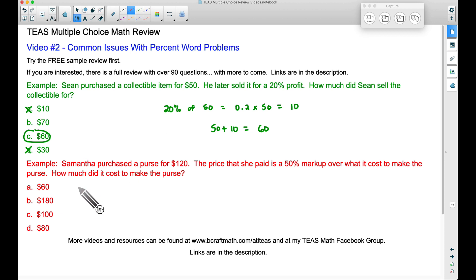Now our second example. This is where I see people make a lot of mistakes. Samantha purchased a purse for $120. The price that she paid is a 50% markup over what it cost to make the purse. How much did it cost to make the purse?